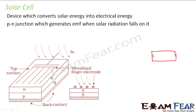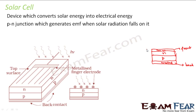This metalized surface is known as the front contact. In the side view, this is N-type on top, P-type below it, then a metal which is the back contact, and another metal on top which is the front contact. Because of the potential difference between the N-region and the P-region, an EMF is generated when solar radiation falls on this. This EMF is known as photo voltage, and because of this photo voltage, a photo current flows through the circuit. The basic principle is that the P-N junction generates EMF when solar radiation falls on it.